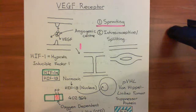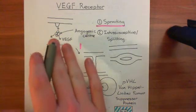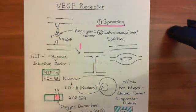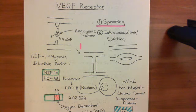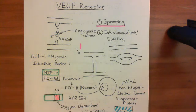When we think about sprouting angiogenesis, the endothelial cells will migrate towards the source of the vascular endothelial growth factor A molecules. So that now concludes our discussion of the vascular endothelial growth factor receptor.